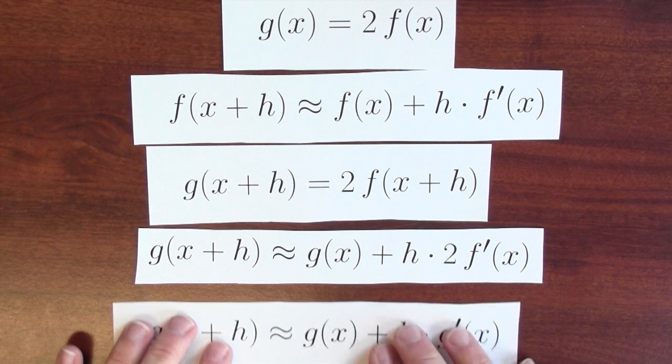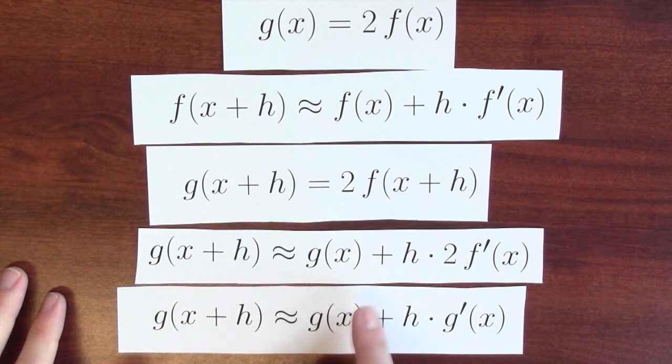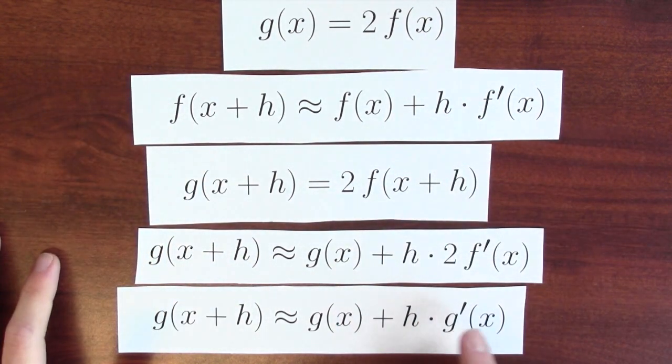Now considering that the actual derivative of g would tell me some information like this. That g's output is about g's old output plus how much I change the input by times the derivative. You're beginning to see what's going on here.